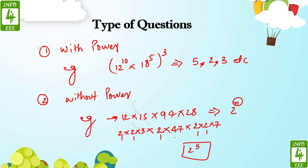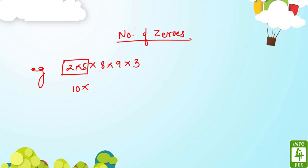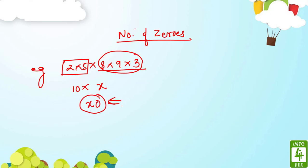So let's start. First, the topic is number of zeros. They will give you an expression and ask how many zeros are there. For example: 2×5×8×9×3. If you find a pair of 2 and 5, that makes 10 in the expression. In this expression we have only one pair, so the answer will be some number ×10, meaning there is only 1 zero.